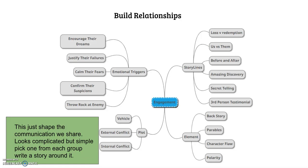So this looks complicated, but I'm going to break it down and make it really simple. All you're going to do is go around this chart and pull out one particular feature of your content to be able to create multiple different pieces of content about it.